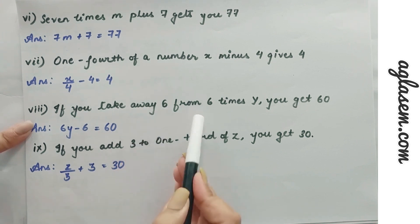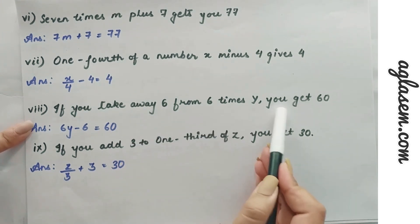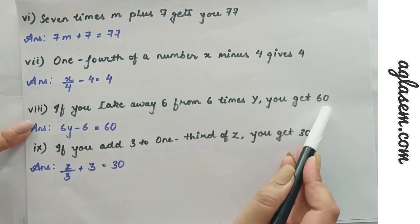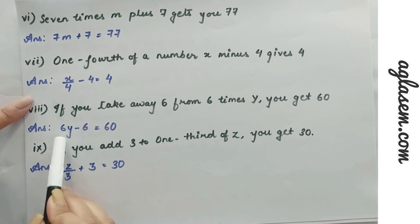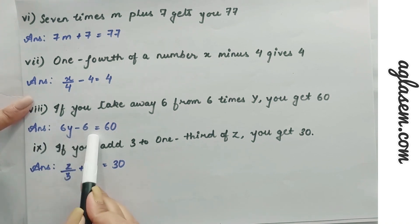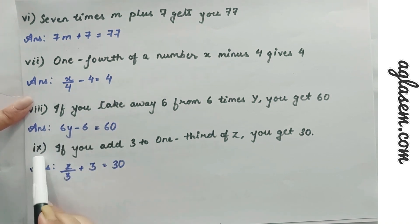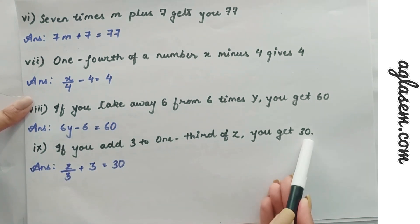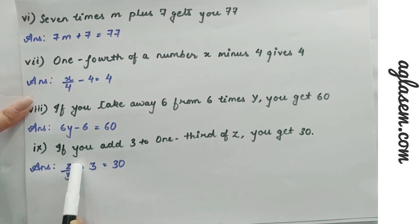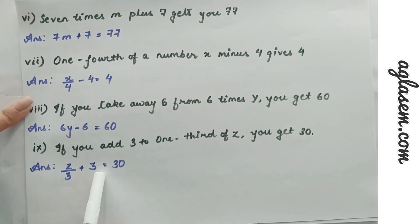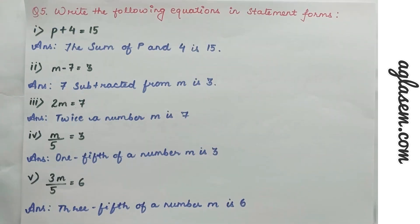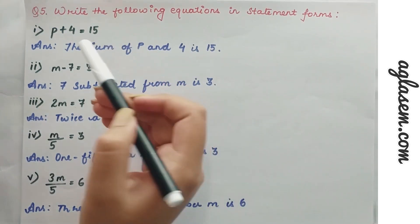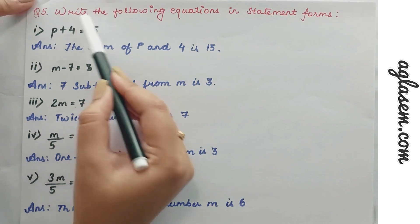Eighth statement: if you take away 6 from 6 times y you get 60, so the equation is 6y − 6 = 60. Ninth statement: if you add 3 to one third of z you get 30, the equation is z/3 + 3 = 30.